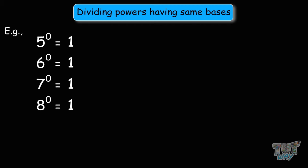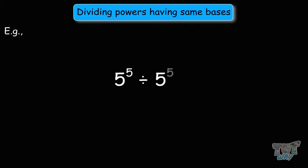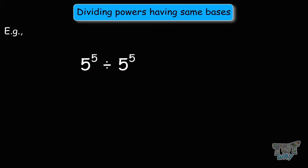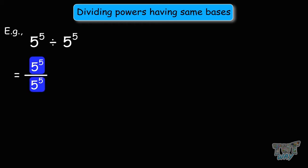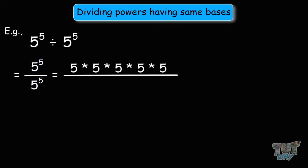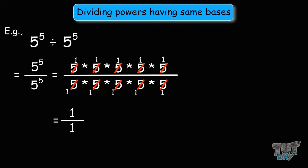Next: 5 raised to the power of 5 divided by 5 raised to the power of 5. According to the law of exponents, when dividing powers with the same bases, we subtract the exponents: 5 to the power of 5 minus 5 equals 5 to the power of 0, which equals 1. We can also verify this practically: 5 multiplied by itself 5 times divided by 5 multiplied by itself 5 times — crossing out all the fives, we get 1 over 1, which equals 1. Both methods give the same answer.